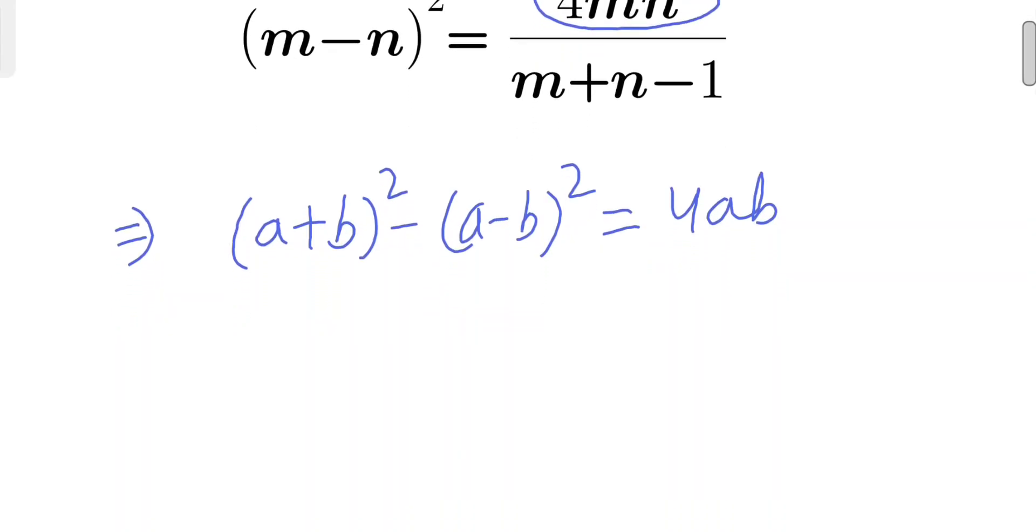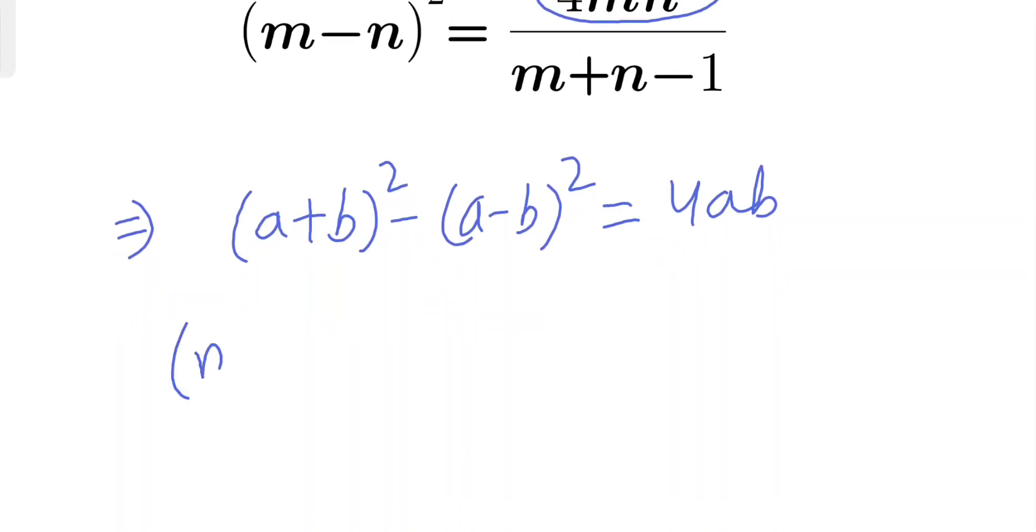We'll write (m-n)² equals (m+n)² minus (m-n)² divided by m+n-1.